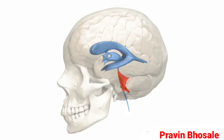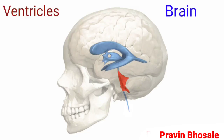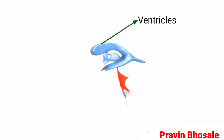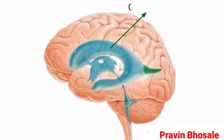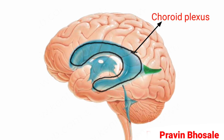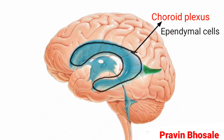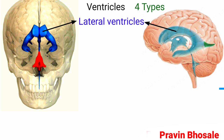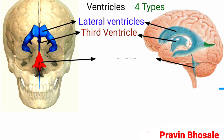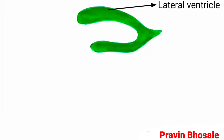Today we'll revise about ventricles in the brain. Ventricles are cavities in the brain filled with cerebrospinal fluid. The choroid plexus is an invagination of pia mater in the ventricle, composed of ependymal cells, and it secretes cerebrospinal fluid. There are four types of ventricles: two lateral ventricles, one third ventricle, and one fourth ventricle.